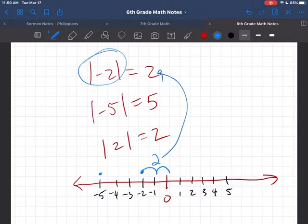Negative five is right here. What is its distance from zero? Well, its distance from zero is one, two, three, four, five. So it gets five.